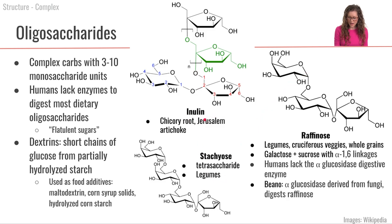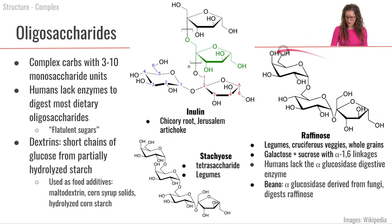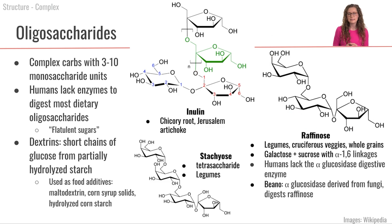Here are three examples of oligosaccharides. Inulin is found in chicory root and Jerusalem artichoke, and we can see it has different kinds of glycosidic bonds. Stachyose is found in legumes. Raffinose is found in legumes, cruciferous vegetables, and whole grains, and it is composed of galactose plus sucrose with alpha-1,6 linkages.